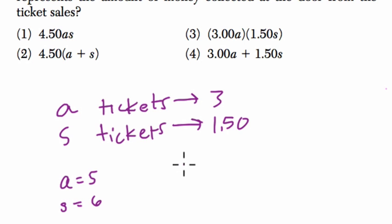How much money would we make? Well, 5 adults times $3 per adult, plus 6 times $1.50, the cost of each student. We would add these two together to get the total amount of money. Let's just call that T.